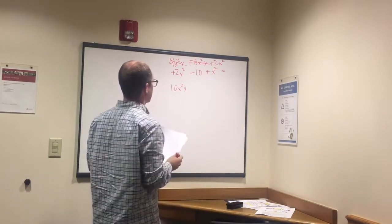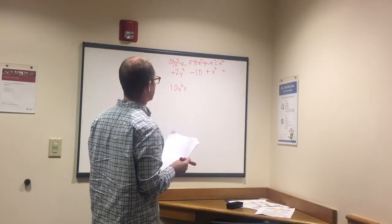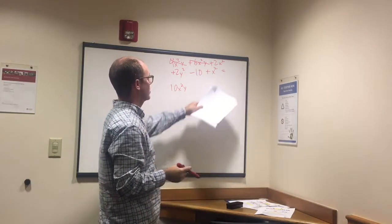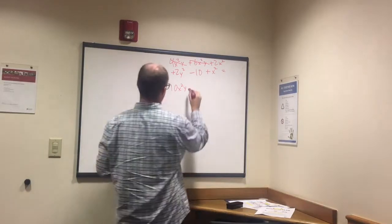And what else do we have? We have 2x squared. Do we have any more x squared? We've got one right here, so that means we got 3x squared.